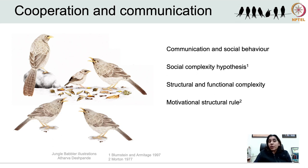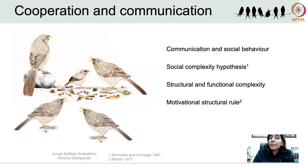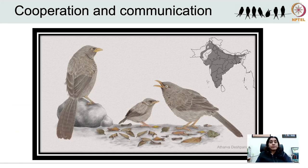In 1977, Eugene Morton proposed a framework of motivational-structural rules, wherein calls produced in similar behavioural contexts — which are functionally similar — should also be structurally similar, with similar acoustic features. There should be structural convergence in calls produced in affiliative contexts and in agonistic contexts. Morton proposed that calls produced in affiliative contexts would be tonal with higher frequency components. These have been tested in mammals but less so in birds. A study conducted by my group on jungle babblers has examined these questions.